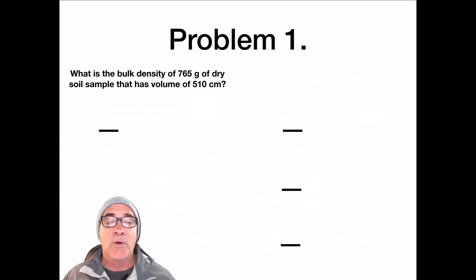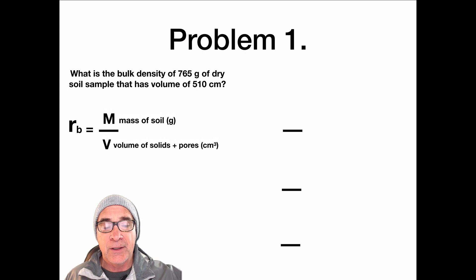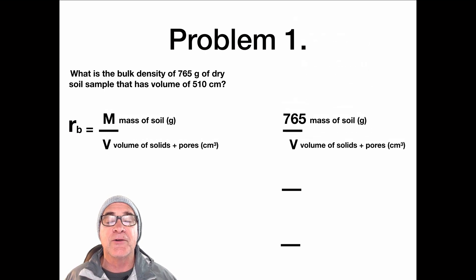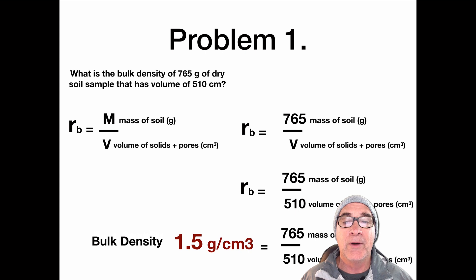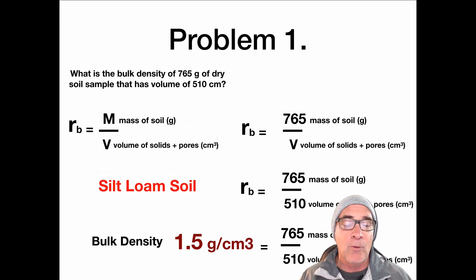Let's take a look at problem number one. What is the bulk density of a soil that's 765 grams dry? Once we dry it all out and put it on the scale, that's what it weighs, 765 grams. And the volume is 510 cubic centimeters. Our subscript B is bulk density. 765 is the mass, the volume is 510. So we're going to divide 510 into 765, and we get a bulk density reading of 1.5 grams per cubic centimeters. And if we were to reference that with the soil textural triangle, it's about where a silt loam soil is. That gives you a perspective of how we can look at bulk density in terms of soil texture.